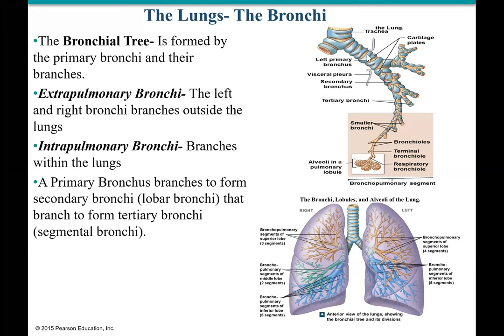The second branching is the lobar bronchi, going to the different lobes. Then it goes to finer segments called segmental bronchi. Just like looking up a tree and seeing branches getting finer and finer to increase photosynthesis, similarly this extensive branching increases surface area so we can get a lot of oxygen, because oxygen demand is constant in our body — no oxygen means no ATP, which leads to death.